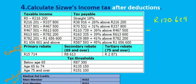What rebate does Caesar qualify for? Remember, Caesar is 67 years old, so he falls into the secondary rebate bracket. Caesar qualifies for the secondary rebate, but remember — if Caesar qualifies for the secondary rebate, he also qualifies for the primary rebate. So let's subtract both rebates: 15,714 for the primary and 8,613 for the secondary.